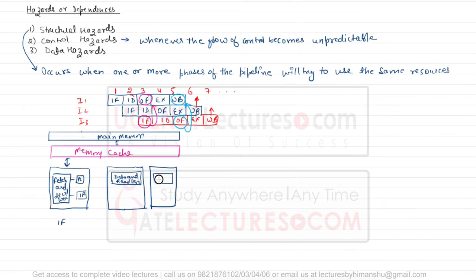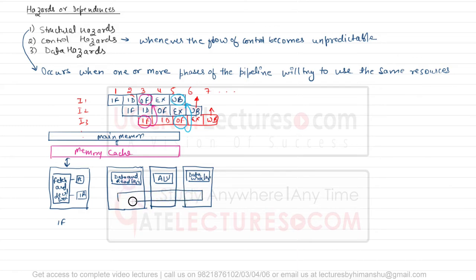The block diagram has an ALU and data-write logic, along with a shared register file. Stage S1 represents instruction fetch, S2 represents operand load, S3 represents the ALU operation (arithmetic/logical), and S4 represents operand store — also called write back.